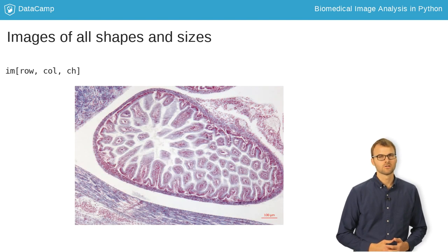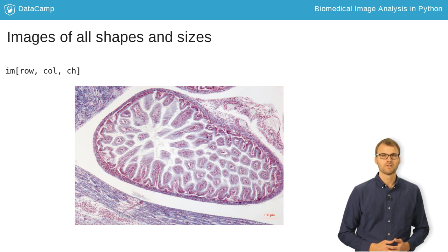Color images are also three-dimensional. RGB images, for example, have three color channels that, when rendered by Matplotlib or other image viewers, express a wide range of colors.